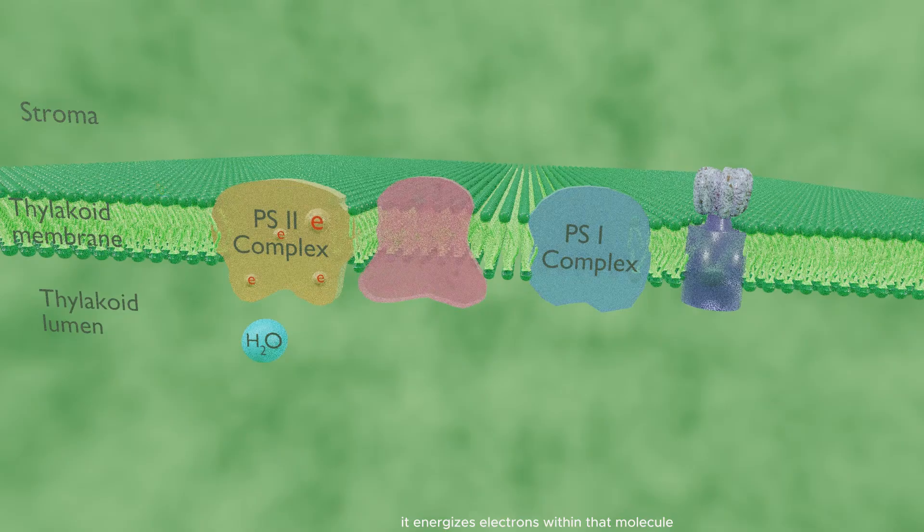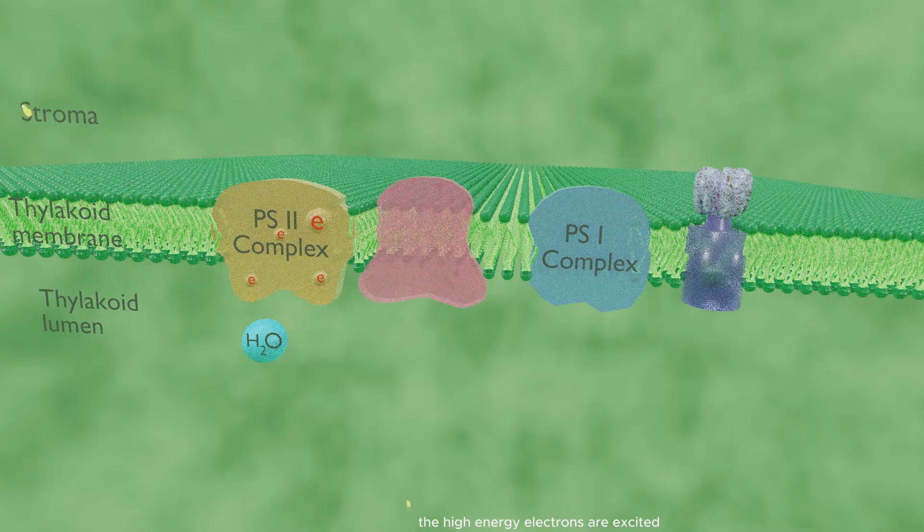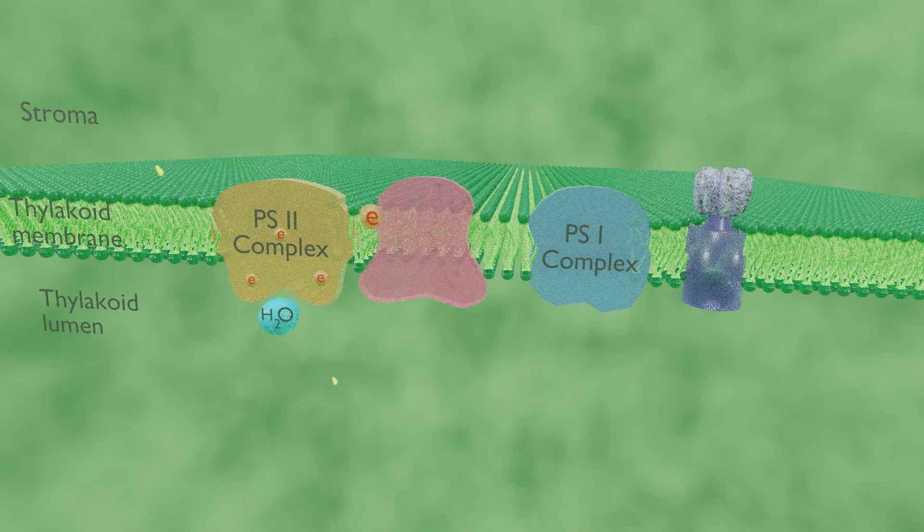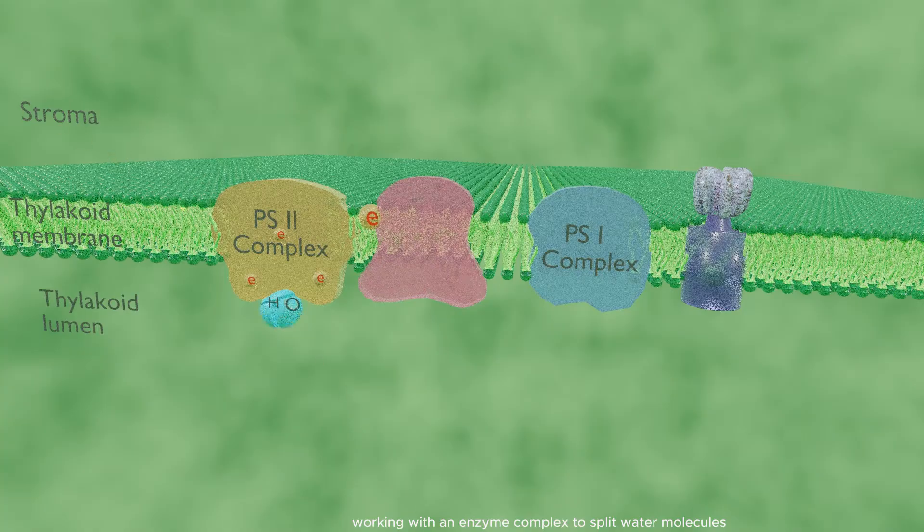it energizes electrons within that molecule. These electrons jump up to higher energy levels. The high-energy excited electrons leave chlorophyll to participate in further reactions, leaving the chlorophyll at a loss. Eventually they must be replaced. That replacement process also requires light, working with an enzyme complex to split water